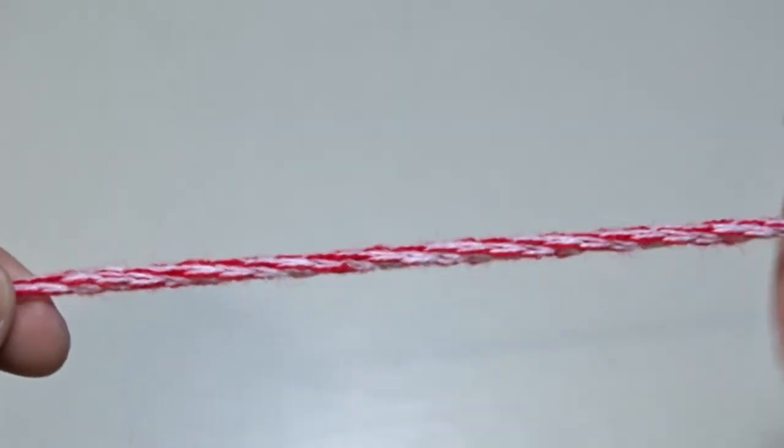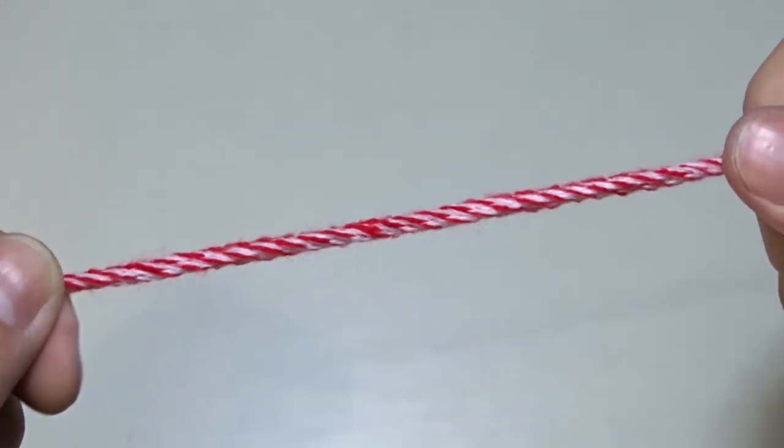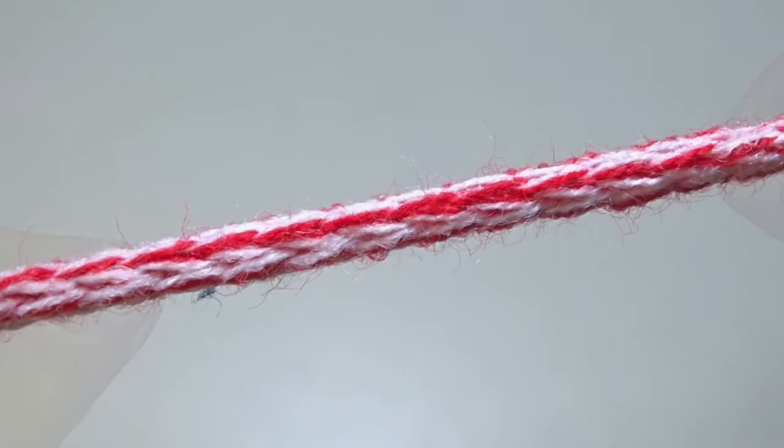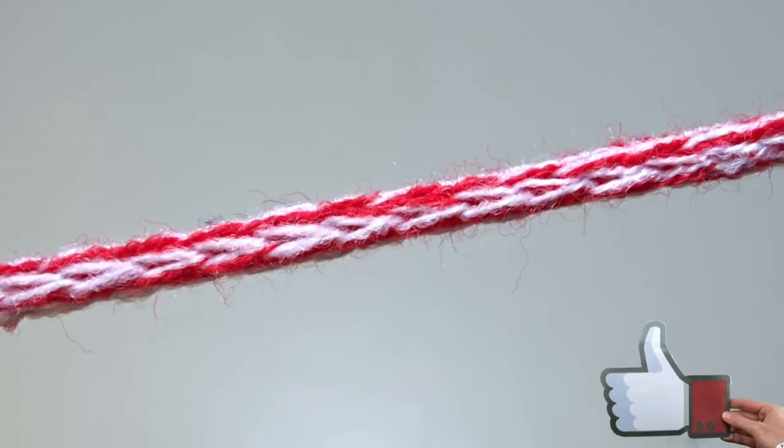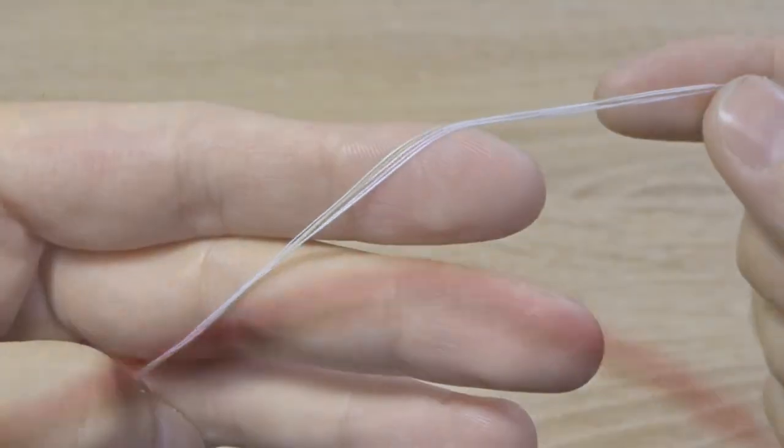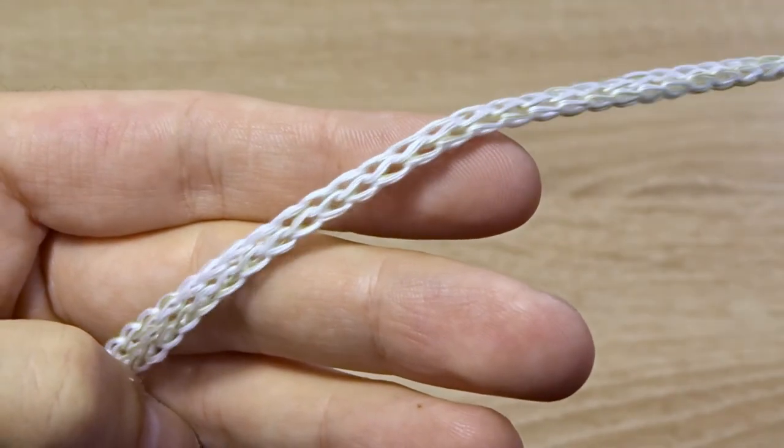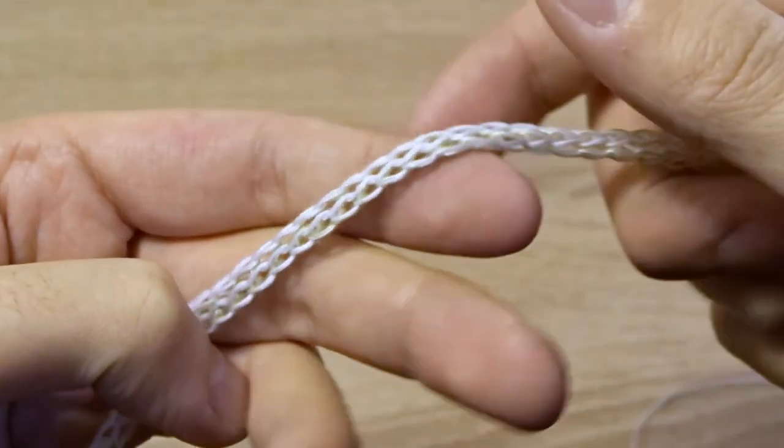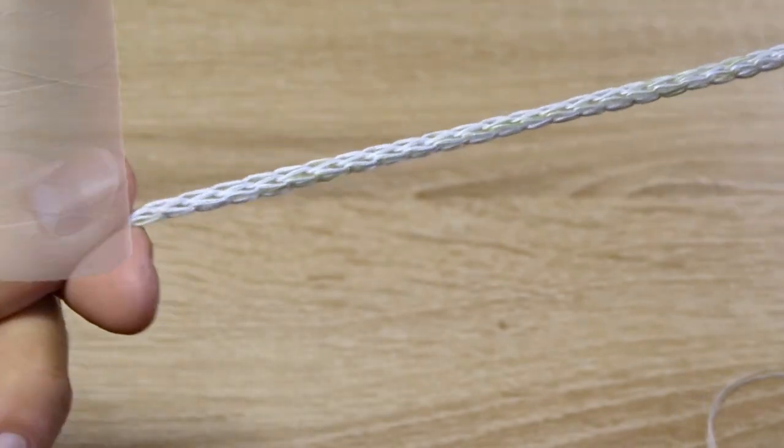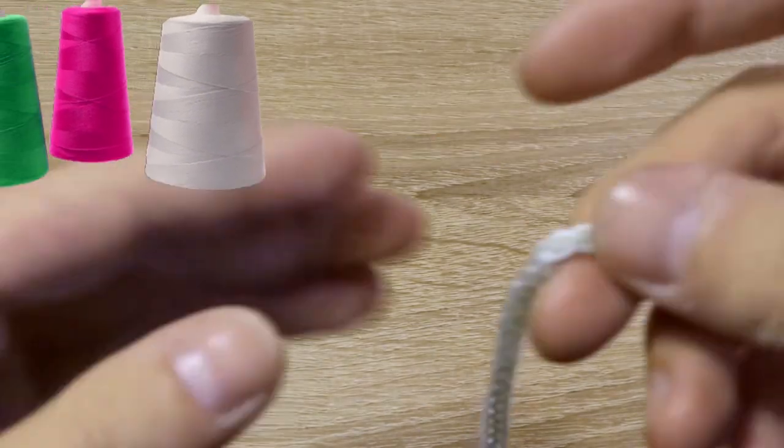If you twist it you will get a spiral which you can sew to the edge of a garment. And here's another idea. I got this cord using 5 strands of sewing spools. If you have spools with old and dried out sewing thread you can use them to make a cord.